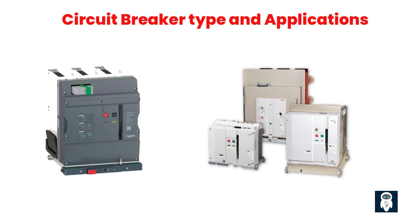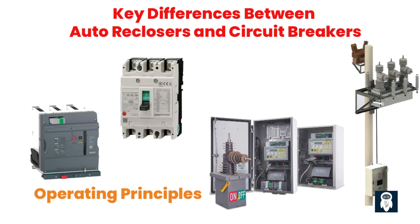Auto reclosers and circuit breakers have fundamentally different operating principles. Circuit breakers are designed to interrupt the flow of electric current when a fault is detected, providing immediate and complete disconnection. Auto reclosers, on the other hand, are capable of automatically re-establishing the power supply after a temporary fault by attempting to close the circuit multiple times.